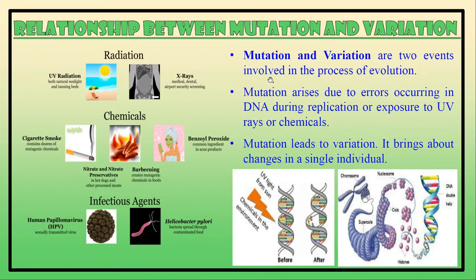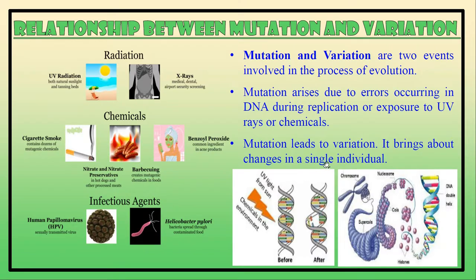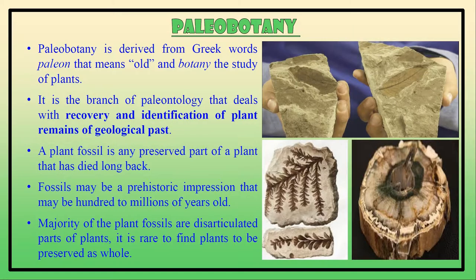Mutation and variation are two different events involved in the process of evolution. Mutation arises due to errors occurring in the DNA during replication, or due to exposure to UV rays, chemicals, and infectious agents. Mutation leads to variation and brings about changes in a single individual, whereas variation occurs in sexually reproducing organisms continuously during meiosis at the time of gamete formation, due to exchange of corresponding segments of non-sister chromatids between homologous chromosomes at the pachytene stage. Variation also leads to evolution.